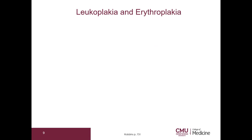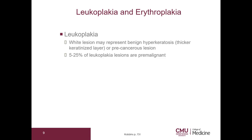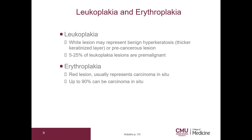Let's go on to discuss leukoplakia and erythroplakia. Leuco means white, so leukoplakia is a white lesion that may represent a benign hyperkeratosis — meaning a thicker keratinized layer — or it may be a precancerous lesion. 5 to 25 percent of leukoplakia lesions are pre-malignant. Erythroplakia is a red lesion because erythro means red; this usually represents carcinoma in situ, and up to 90 percent of erythroplakia lesions can be carcinoma in situ.